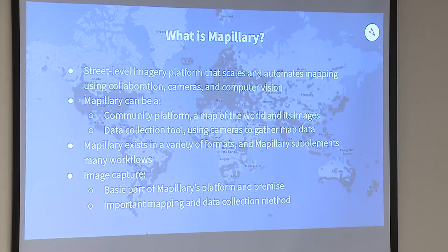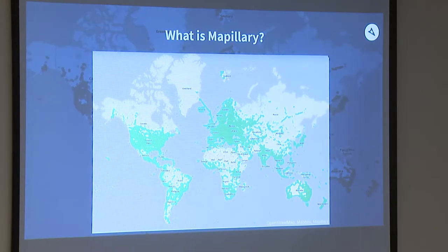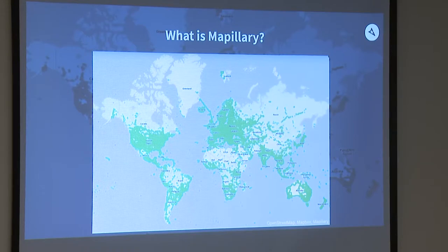For many people, it's a very important method for mapping and data collection. We'll take a look at how it can be a tool and examples of how you can use it. You can look at the global overview and see where you came from — there's probably a Mapillary image there or very nearby. Visit the website to zoom in, or you can download the mobile application.